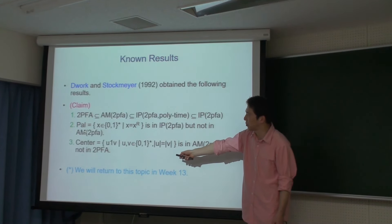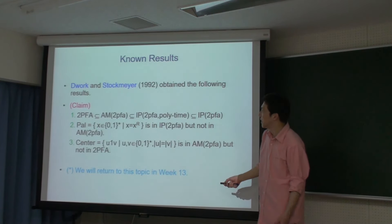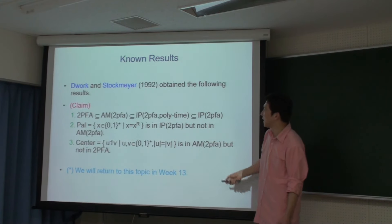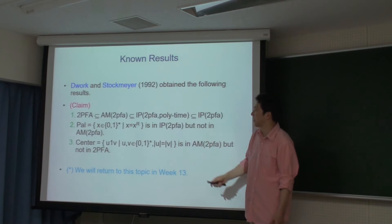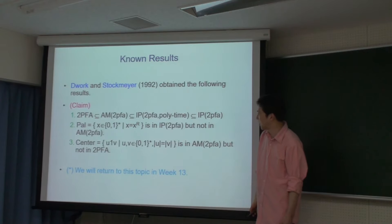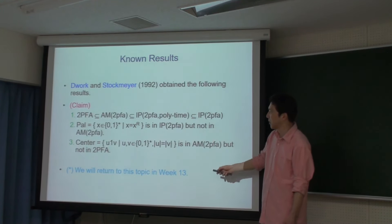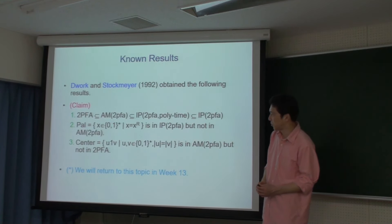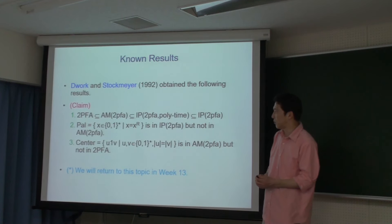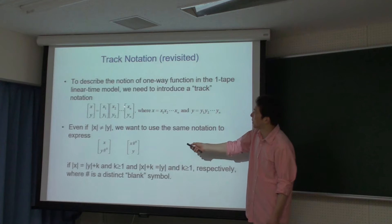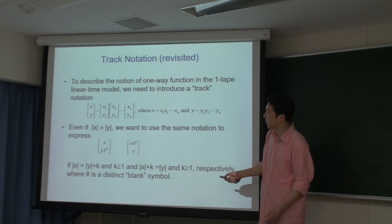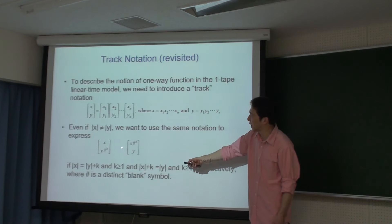DworkとStockmeyerが証明したこととして、例えばPalindromeはIP(2PFA)に入っていますが、パブリックコインにすると入っていません。セパレーションができます。また中央ビットが1かどうかを判定する問題は、パブリックコインの2PFAには入っていますが、単独の確率的オートマトンには入っていないことがわかります。この辺の話は13週目に量子化した形で再度扱います。